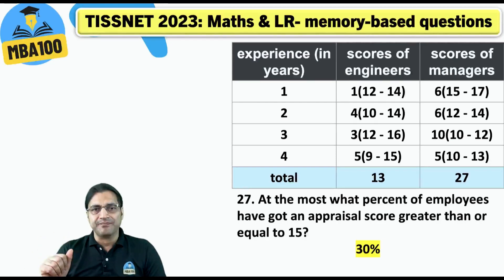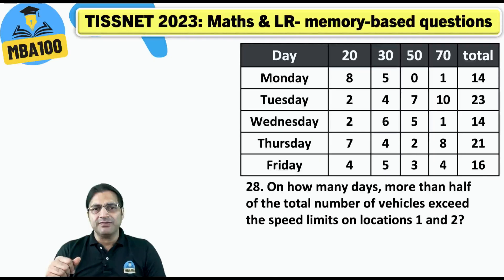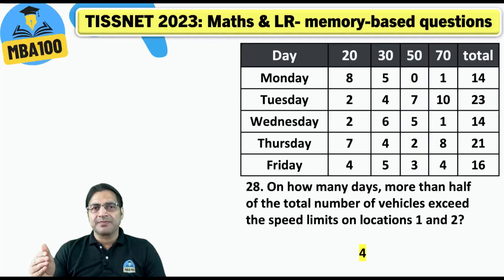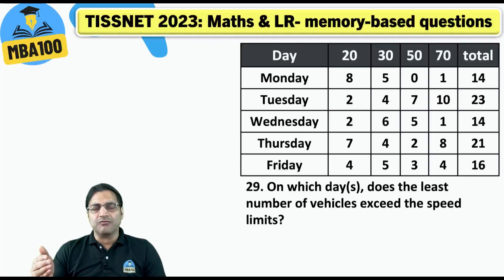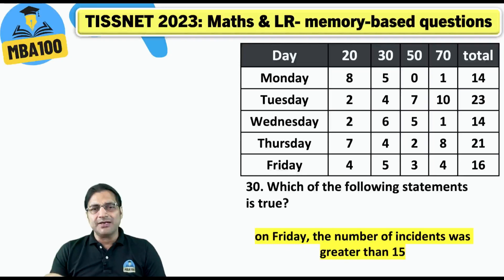The answer to that question was 30 percent. This answer key is 100 percent accurate. There was also one data set on vehicle speed limits. On how many days did more than half of the total vehicles exceed the speed limits at locations 1 and 2? The answer is 4 — every day except Tuesday. The least number of vehicles exceeding the limit is 14, occurring on Monday and Wednesday. On which day is the statement true? On Friday the number of incidents was greater than 15.